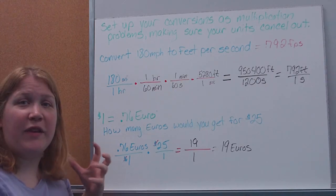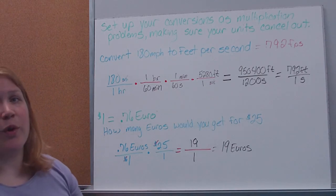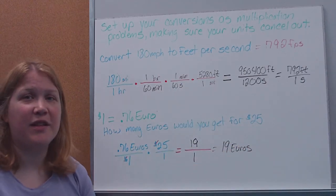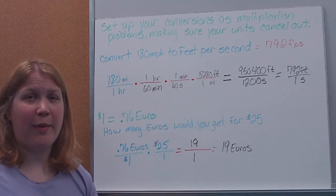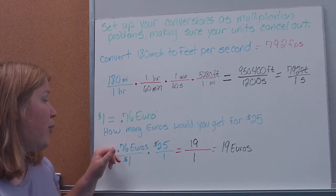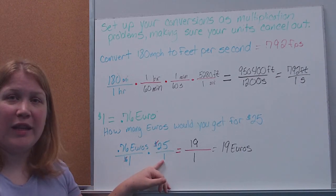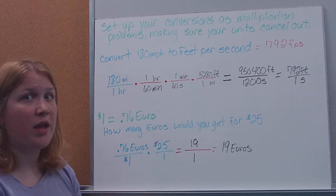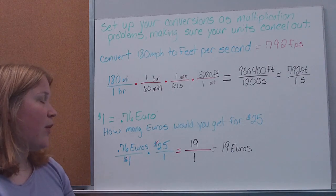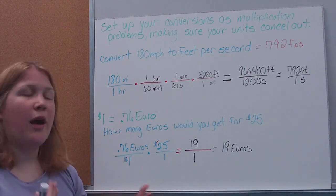Here's an example of exchanging money using an exchange rate. One dollar is worth 0.76 of a euro, so the euro is worth more than the dollar — one dollar will not buy you one whole euro. How many euros would you get for $25? We could set this up as a proportion, but since we're talking about dimensional analysis, we set it up that way. I want to wind up with euros, so I leave euros on top. I know 0.76 euros is worth $1, and I have $25 — I put that over 1. Dollars cancel, I multiply, and I get 19 over 1, which is 19 euros. So $25 becomes 19 euros.